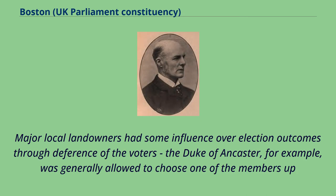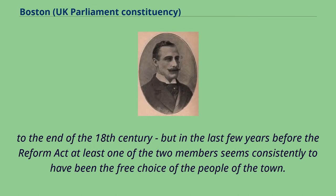Major local landowners had some influence over election outcomes through the deference of the voters. The Duke of Anchester, for example, was generally allowed to choose one of the members up to the end of the 18th century, but in the last few years before the Reform Act, at least one of the two members seems consistently to have been the free choice of the people of the town.